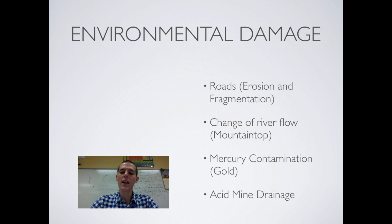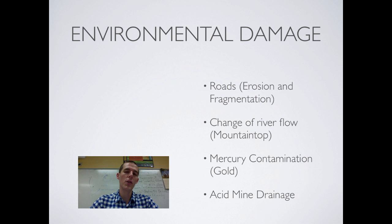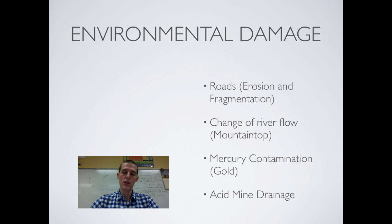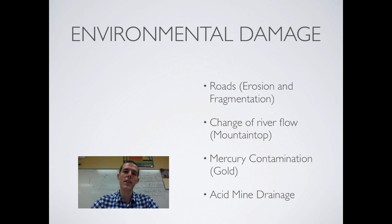In some cases, especially in the hunt for gold in placer mining, mercury can be used. Mercury is a highly volatile neurotoxin, and it moves easily between air, water, and soil. If a miner is looking for gold, mercury is often used in that process, which is highly toxic.